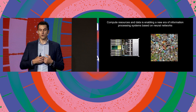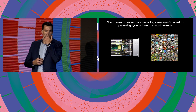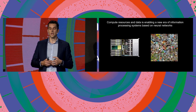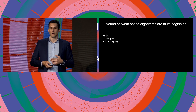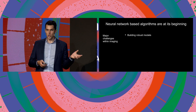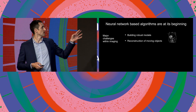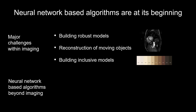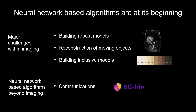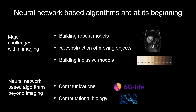We are in an era where compute resources and data are enabling a new era of information processing systems based on neural networks, and this is not only happening in imaging — it's really just at the beginning. There are lots of challenges left in imaging, for example building robust models, reconstructing moving objects such as the heart, and building inclusive models that work for everyone. There are also many other domains where neural networks are replacing classical algorithms — for example in communications, where all the algorithms in your smartphone are now increasingly being learned and becoming neural network-based. The same is happening in computational biology.